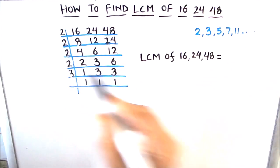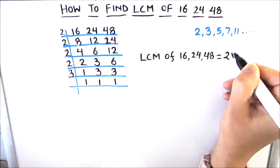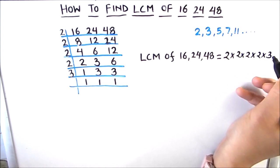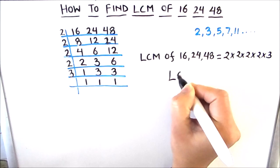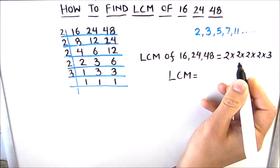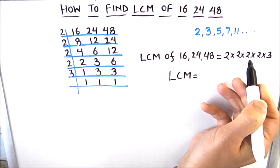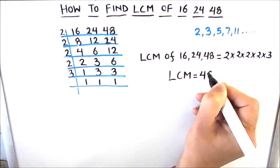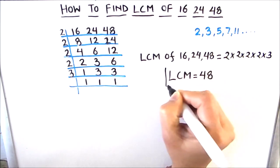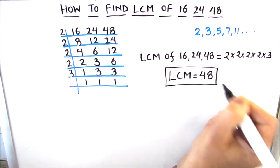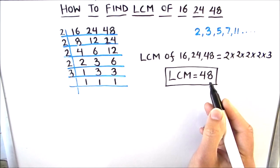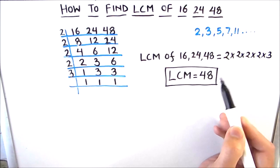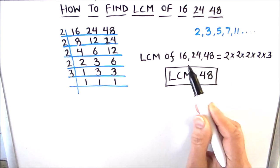The product of the left-hand side numbers is 2 times 2 times 2 times 2 times 3. So: 2 times 2 is 4, 4 times 2 is 8, 8 times 2 is 16, and 16 times 3 is 48. The LCM of the three numbers is 48 — this is the least number which is fully divisible by 16, 24, and 48, and appears in the multiplication tables of all three.